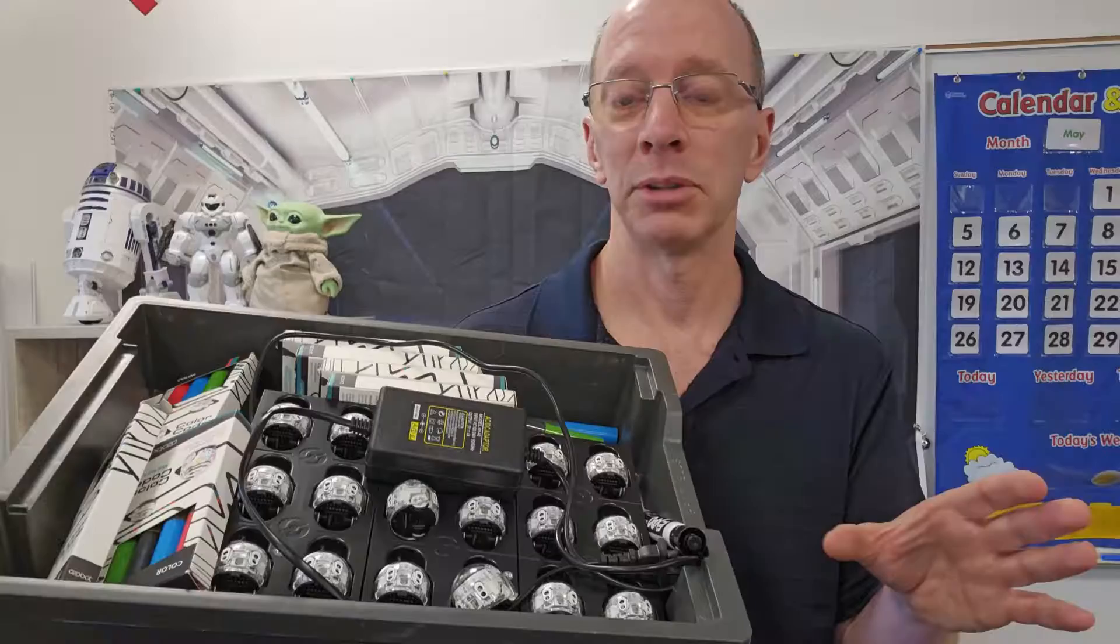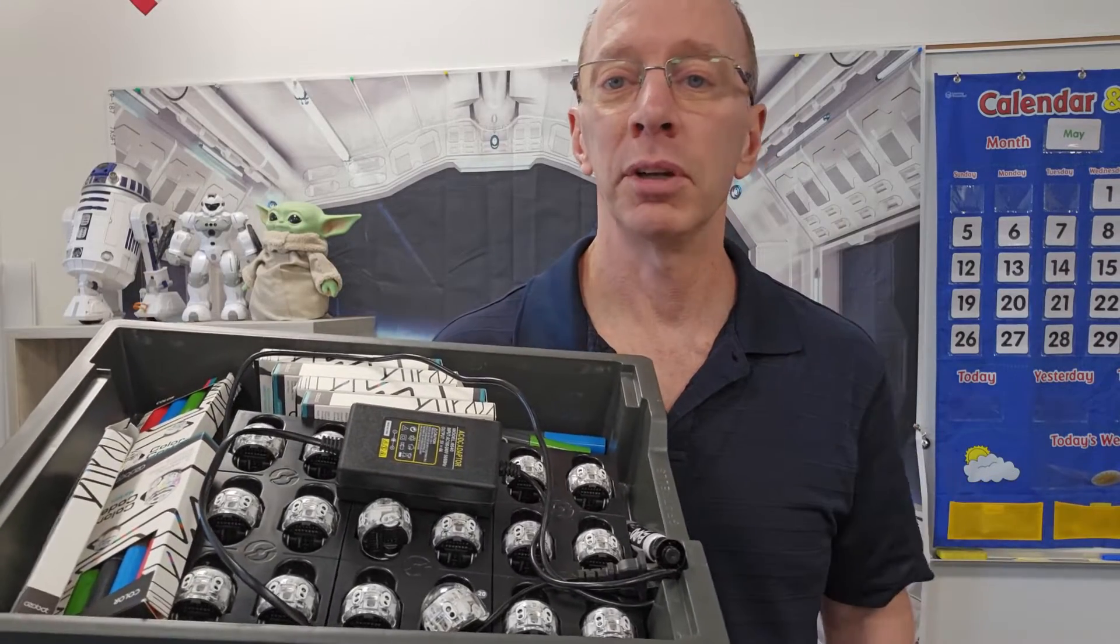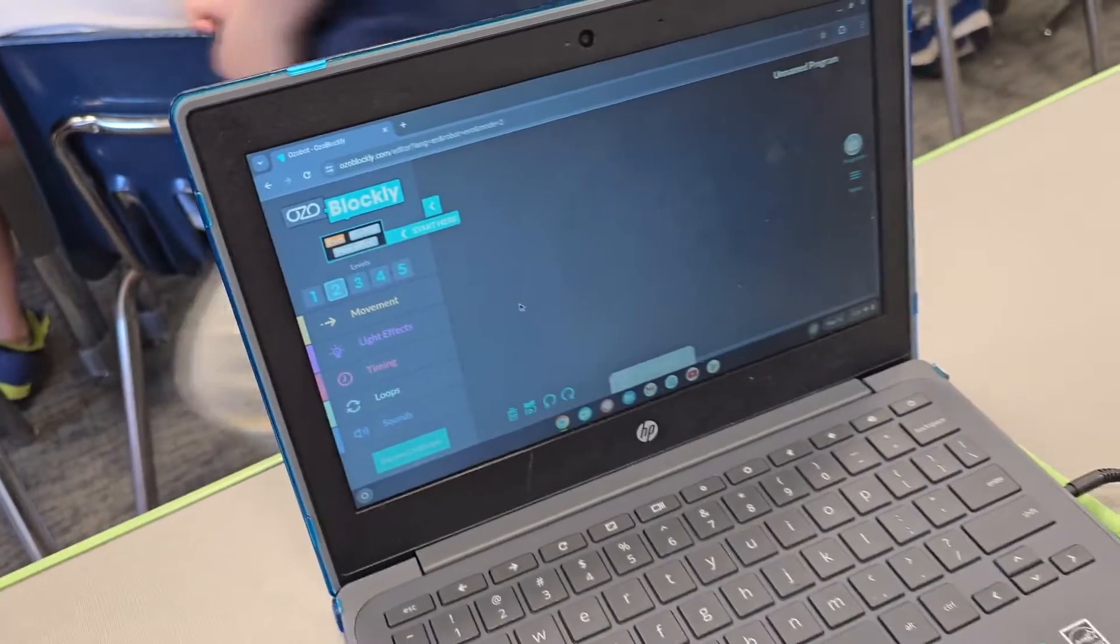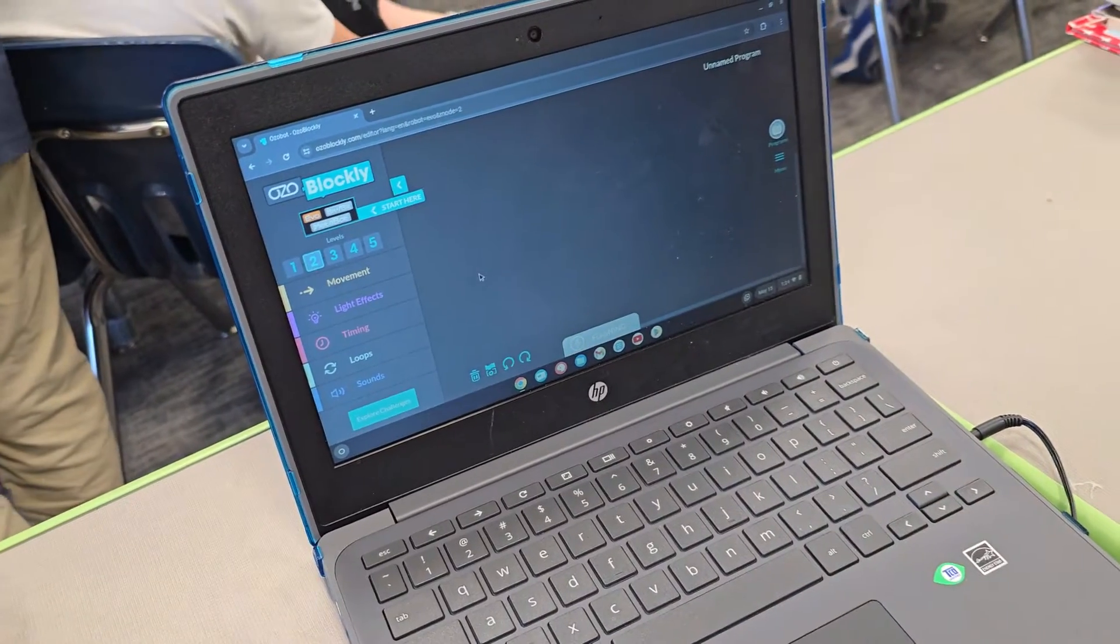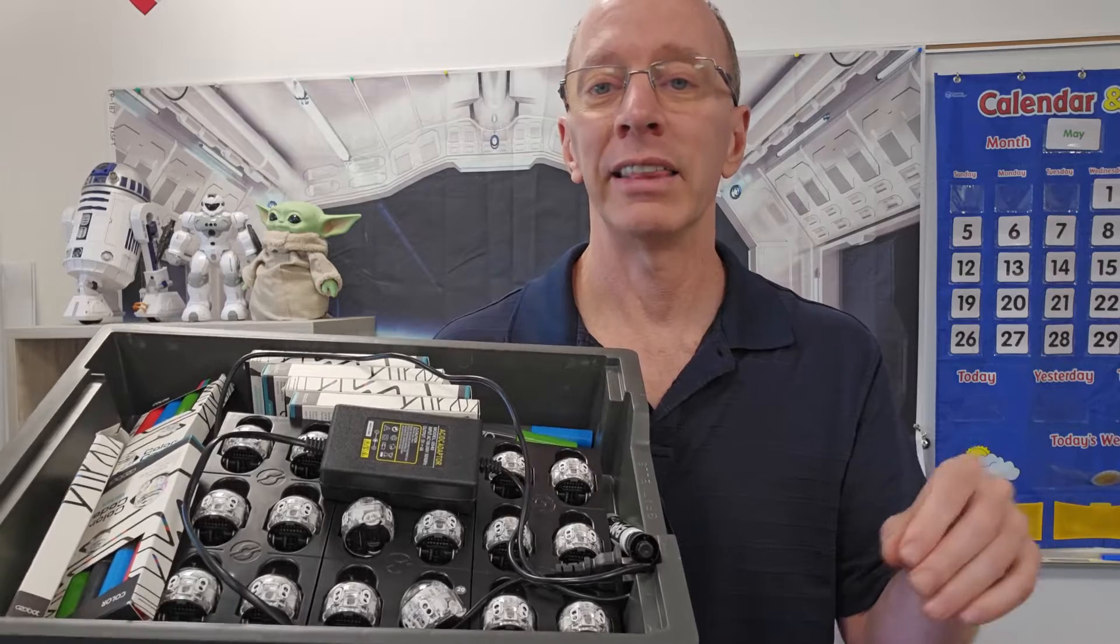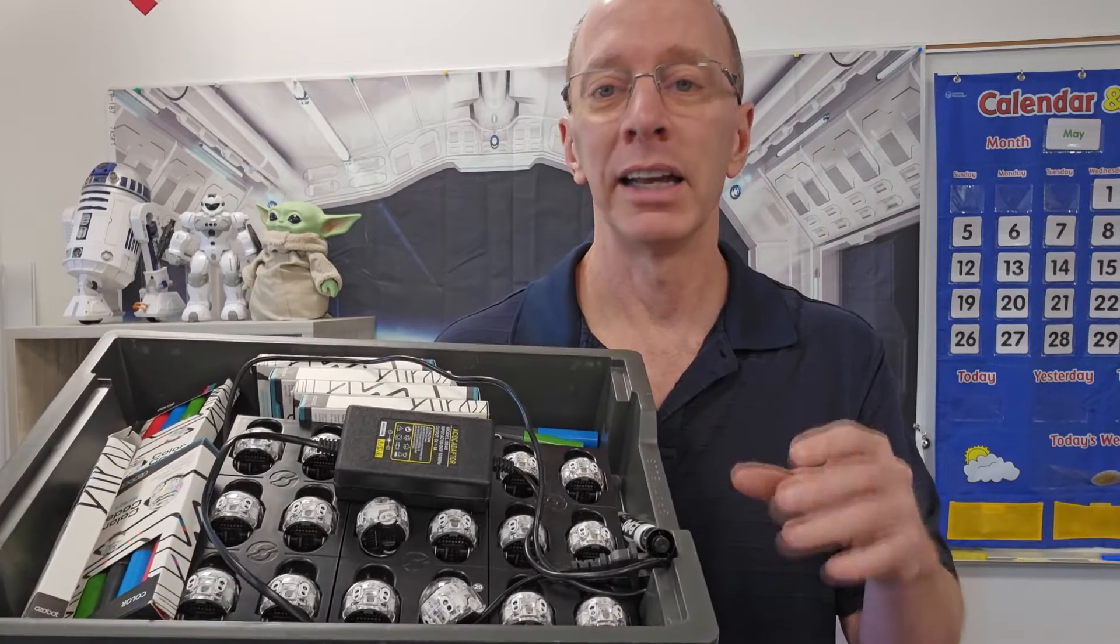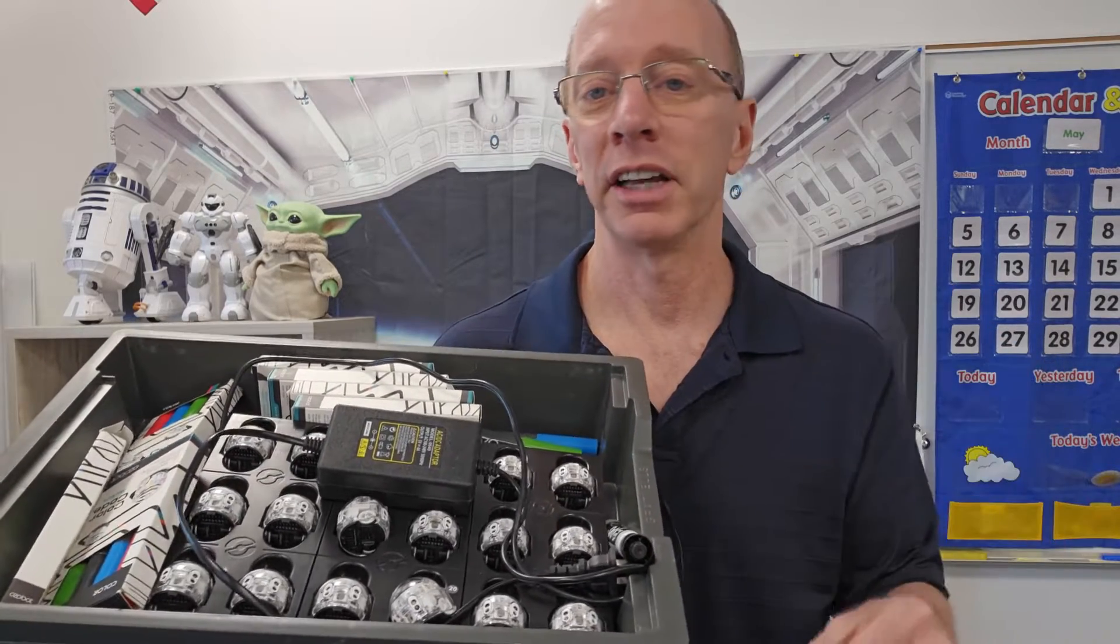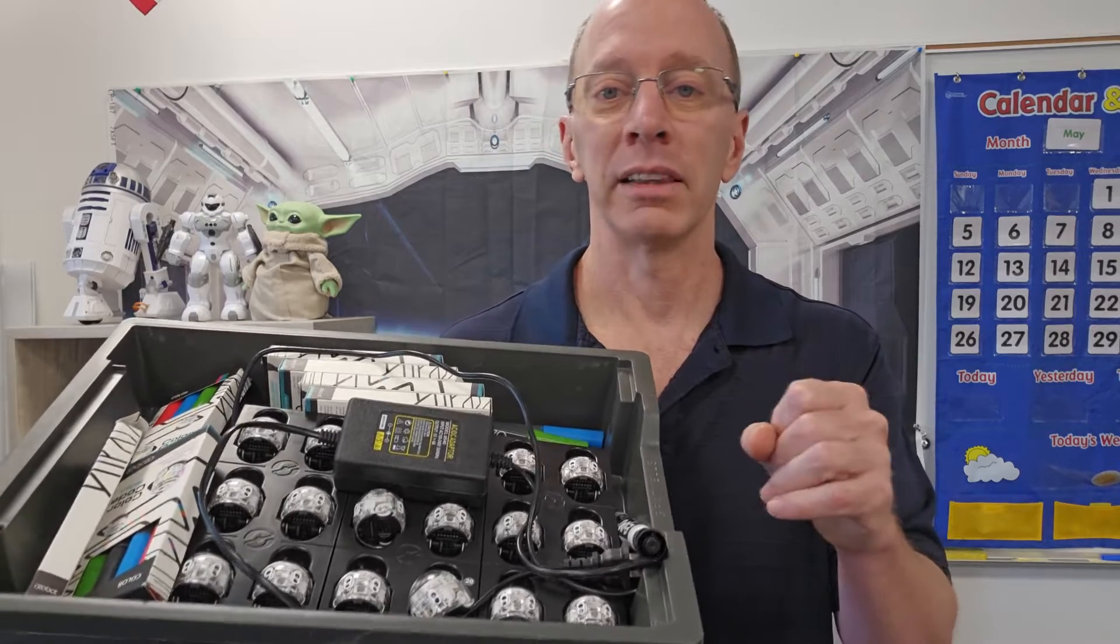You can also use the computer to do a block code, and then the students will enter the code onto the computer, and then they calibrate their Ozobot, and then they can activate it on their desk, and it follows the command that they put in.